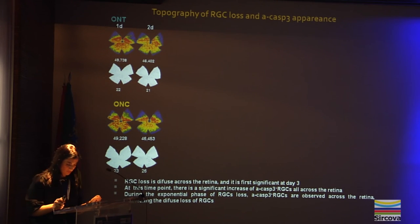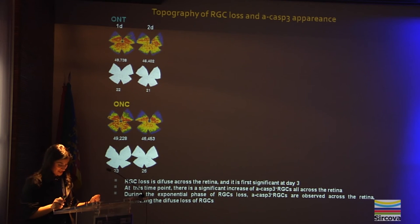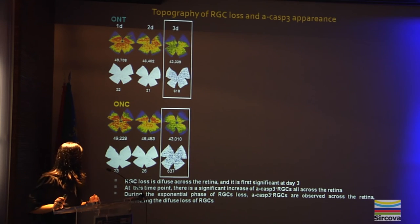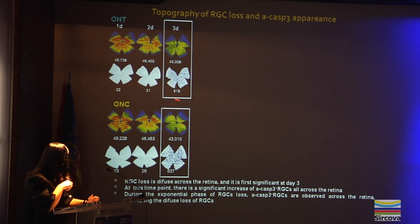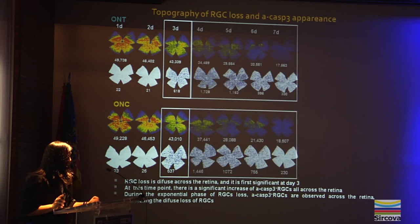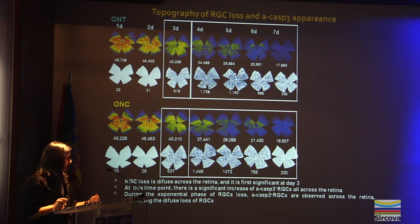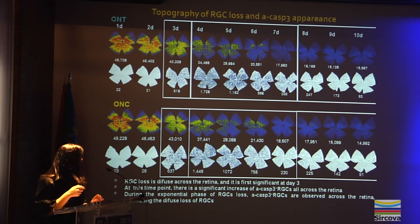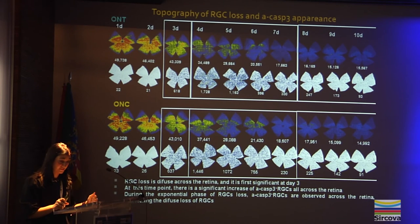Finally, when we analyze the topography of ganglion cell loss and caspase-3 expression, we observe that ganglion cell loss is first significant at day 3 and is diffuse across the retina. At this time point, there is a significant increase of active caspase-3 across the retina. During the exponential phase of ganglion cell loss, active caspase-3 positive ganglion cells are observed across the retina in parallel to the diffuse loss of ganglion cells. From 8 to 10 days, in agreement with the quantitative data, the loss of ganglion cells and the expression of active caspase-3 is very small.